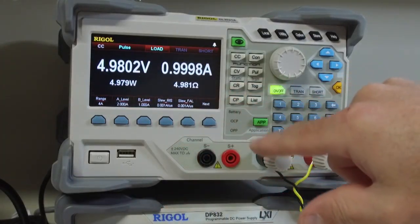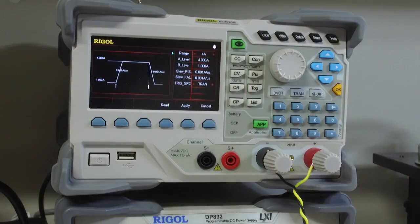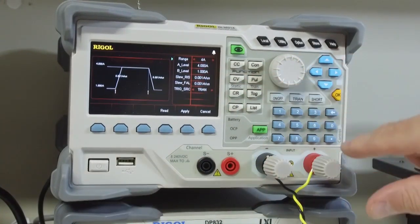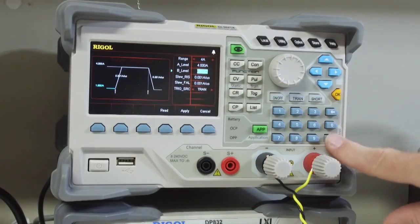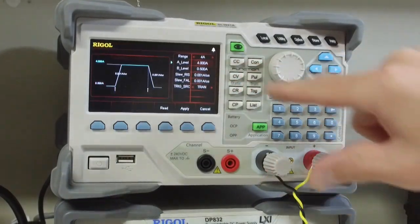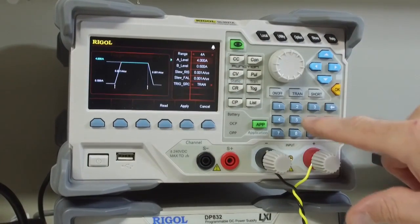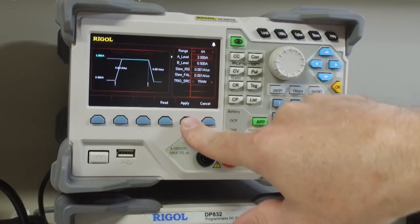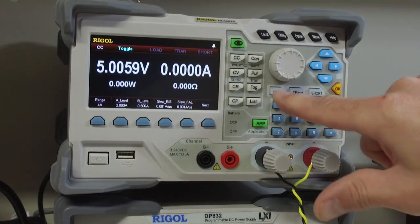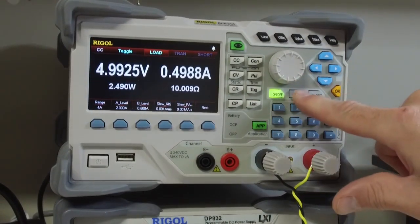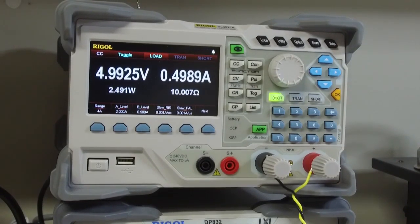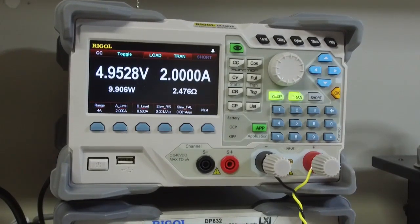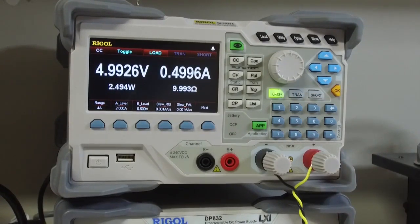Another nice feature is this toggle transient. So I'm going to adjust my steady state to half an amp, 0.5. And I'll set my A level to 2 amps. Apply. So what this is going to do is when I hit the transient button, it will apply that 2 amp load until I push the button again. So here we go. I'll push the transient. There's our 2 amps. I'll push it again and it will toggle off.